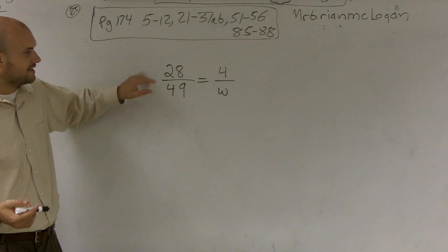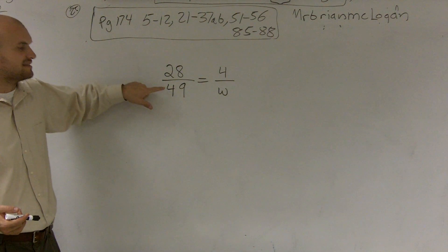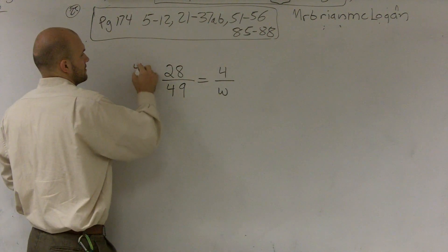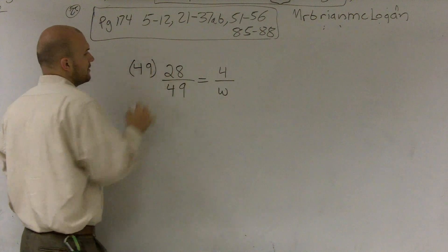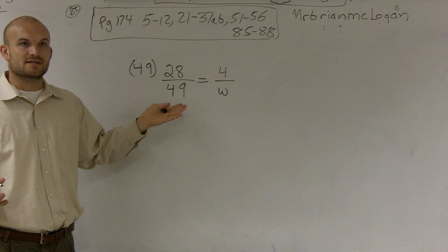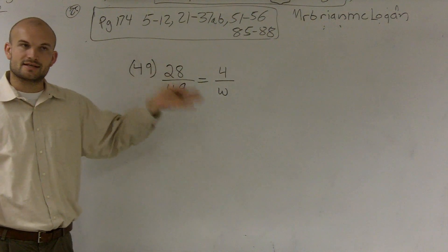So to get rid of this fraction, I have to, instead of dividing by 49, I'm going to have to do what? Multiply by 49. Now, a number multiplied by 49 and divided by 49, now it's going to what? Cancel. Cancel out, right? To give you one.